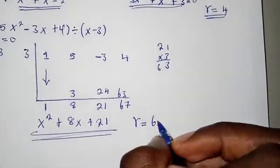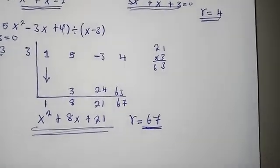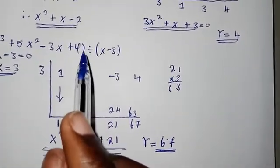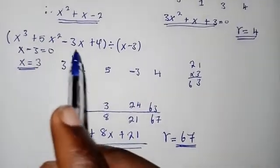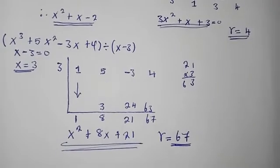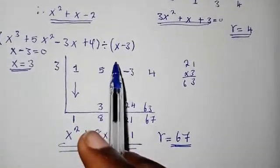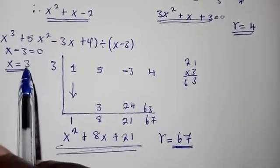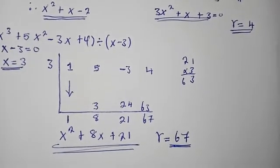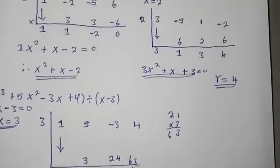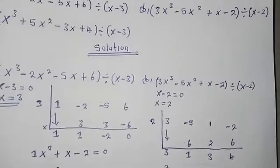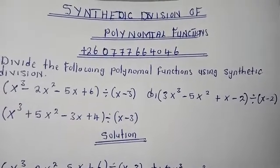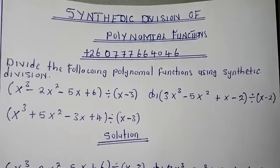The remainder of 67 tells you that x minus 3 is not a factor of this polynomial. When we say it's not a factor, it means when you factorize by whichever method you won't find x minus 3 as a factor. This is how you solve these questions — they are quite easy. Those are my details, don't forget to subscribe, hit the like button, and share with others. Thank you so much.